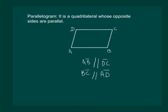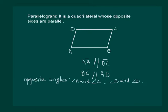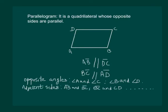Also note that angle A and angle C are called opposite angles; similarly angle B and angle D are opposite angles. Next, AB and BC are adjacent sides, and angles on the same side, like angle A and angle B, are called adjacent angles.